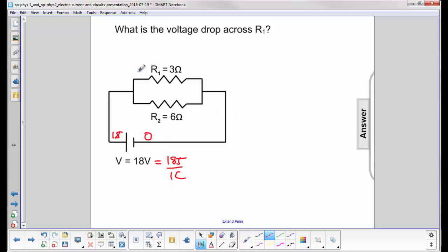That means up here all your charges still have this 18 joules per coulomb and on the other side every coulomb has zero joules per charge. So the voltage drop across both of these resistors will be 18 volts.